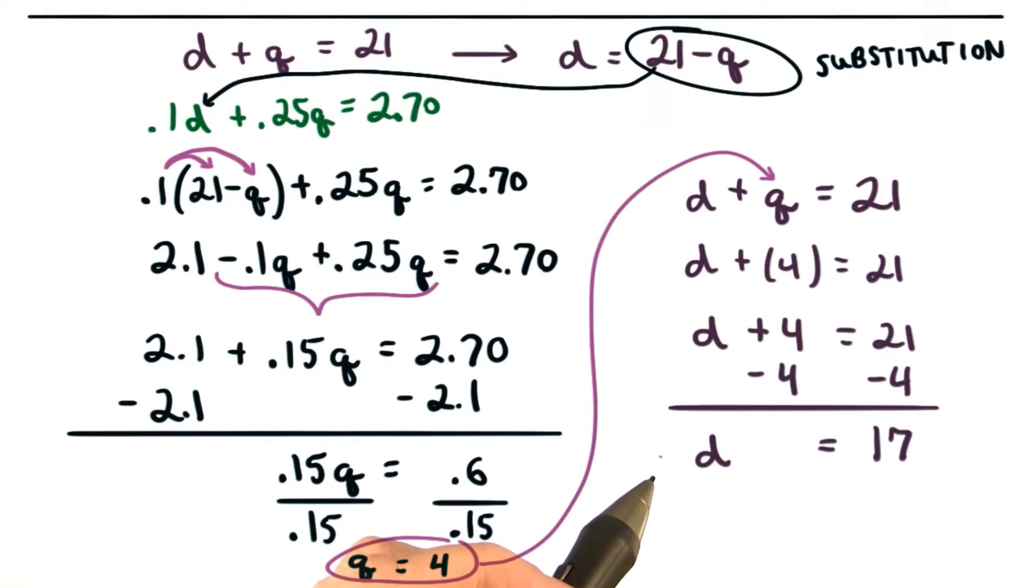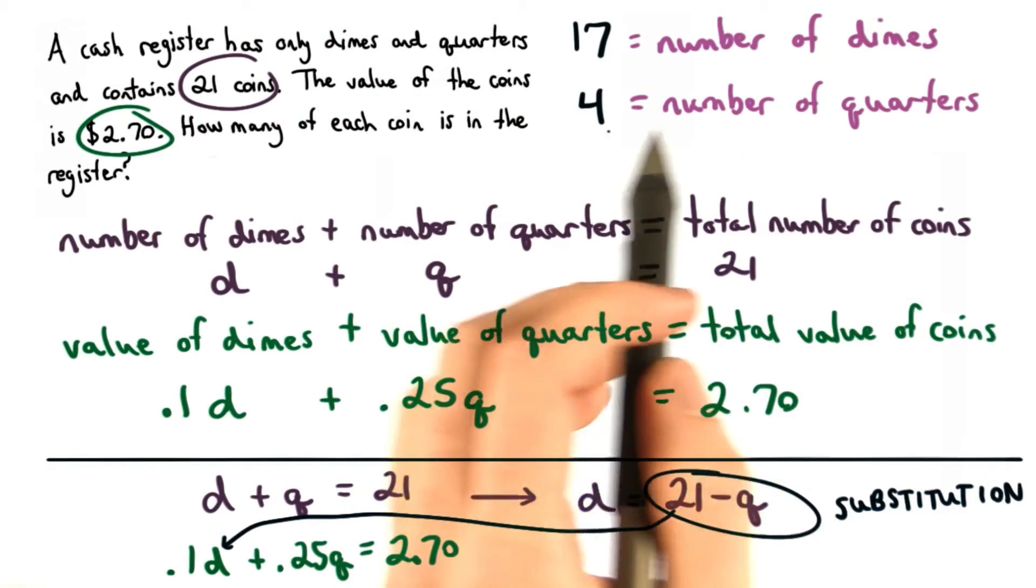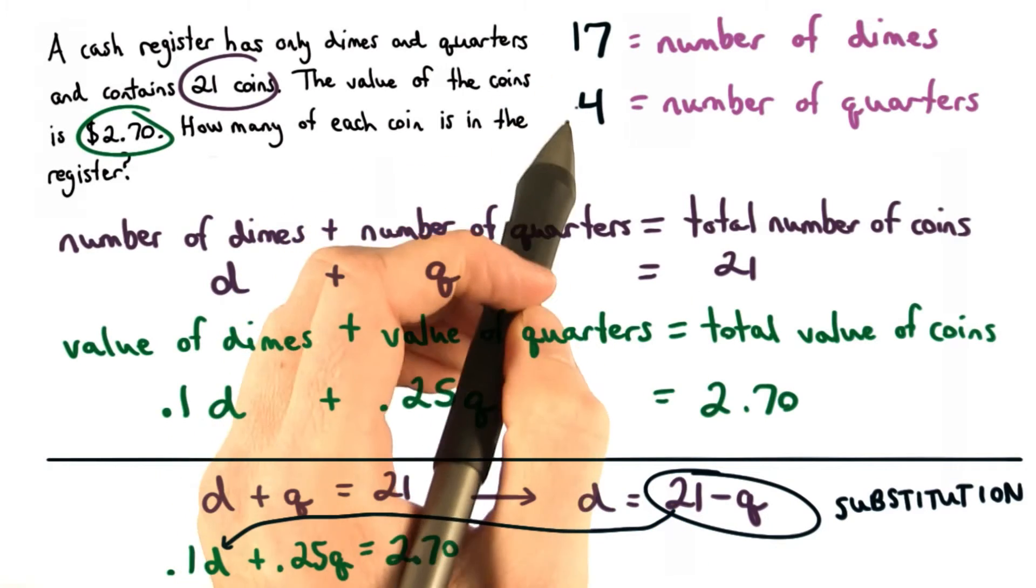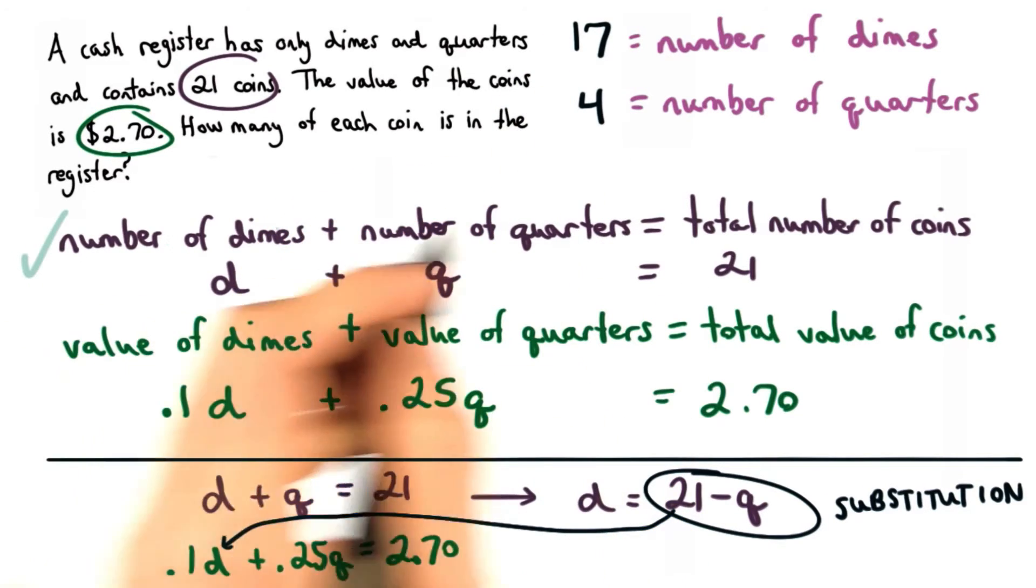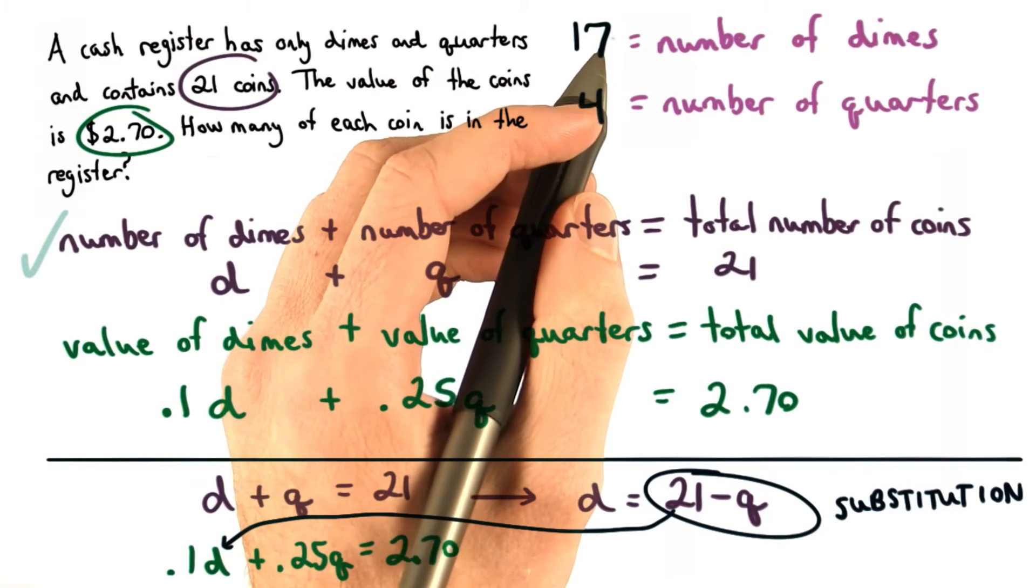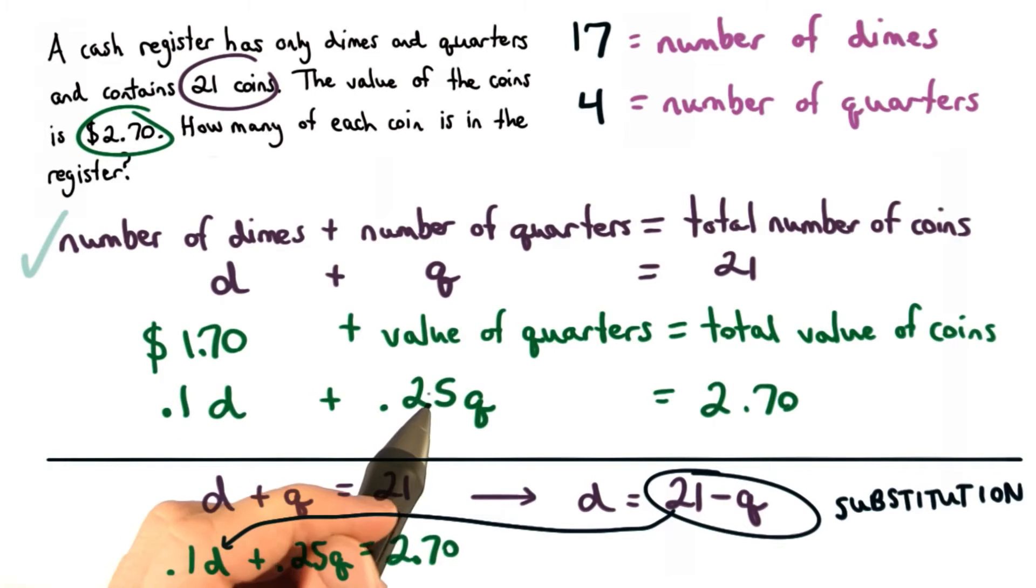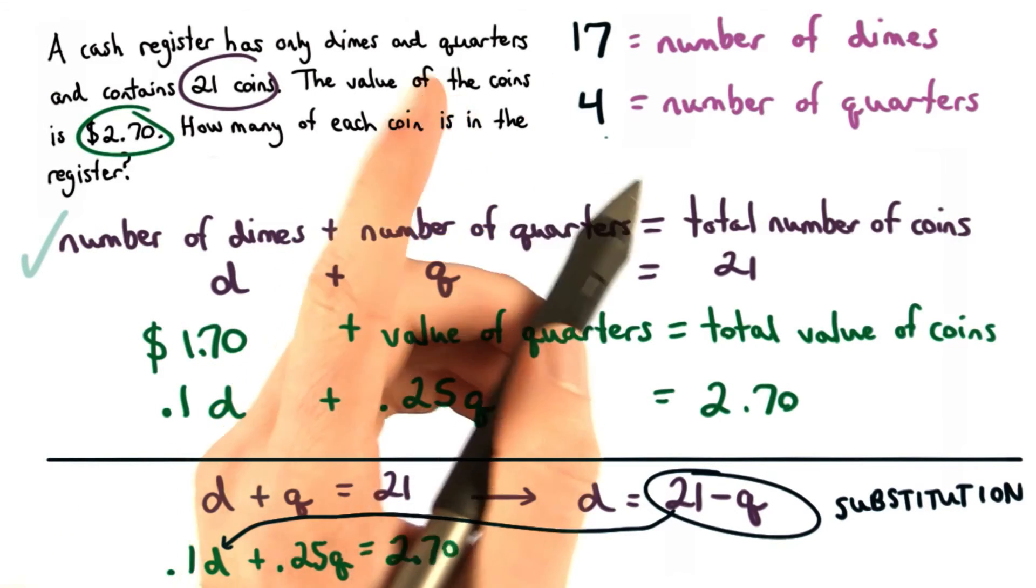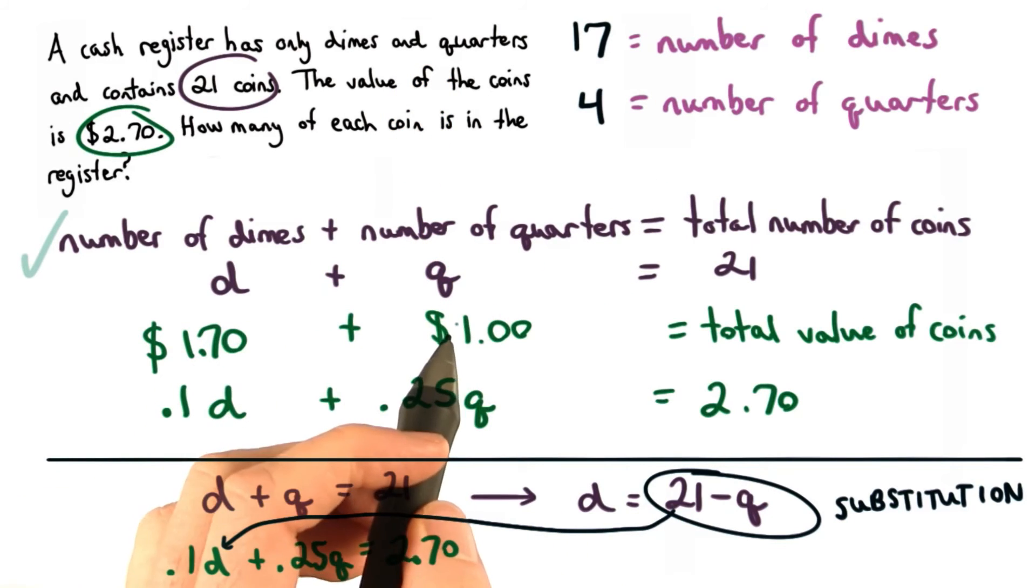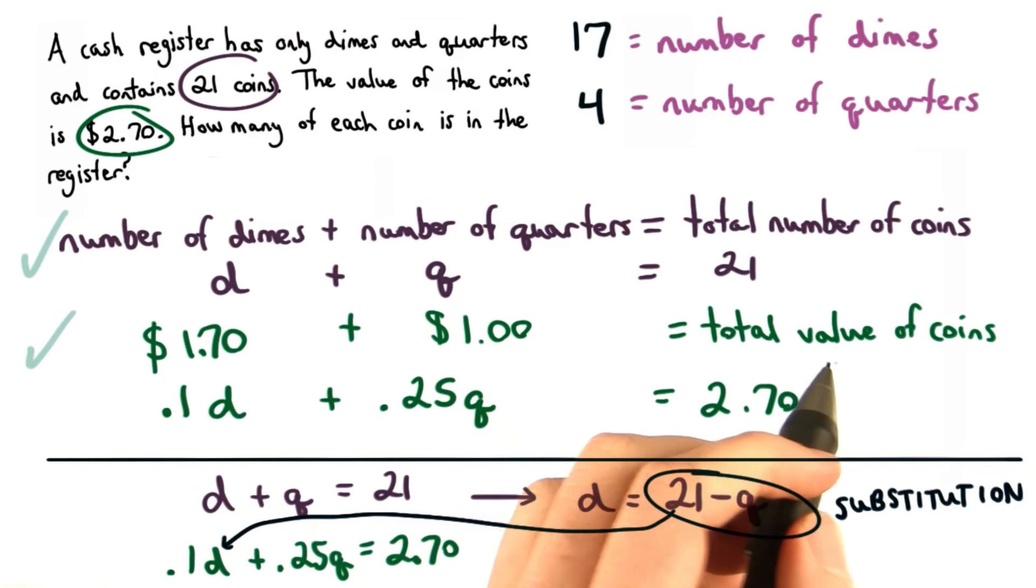Let's go back to our original problem and make sure that this makes sense. We said we had 17 dimes and 4 quarters. Well, the total number of coins should be 21, and yes, those two add up to 21. So we know this first equation is true. One dime is worth 10 cents, so 17 dimes would be worth $1.70. One quarter is worth 25 cents, so four quarters would be worth $1.00. And with simple addition, we know that $1.70 and $1.00 add up to $2.70. So the second equation is true as well.